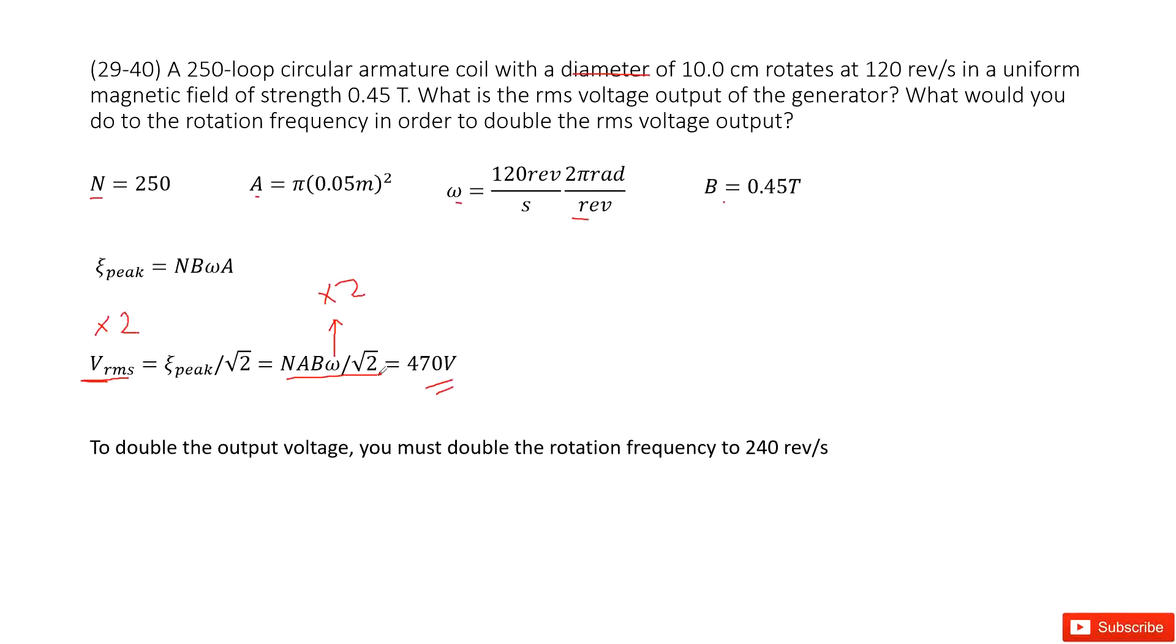So to double the output voltage, the rotation frequency will double. Omega becomes twice, 250 revolutions per second. Thank you.